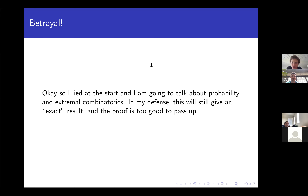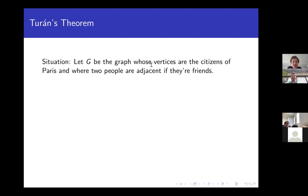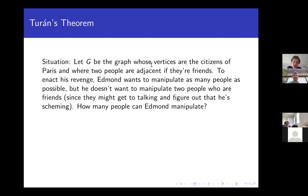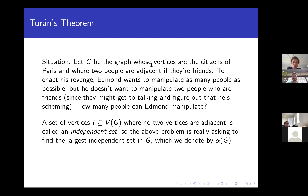Let G be the graph where the vertices are people in Paris and two people are adjacent if they're friends. Edmund wants to manipulate people for his revenge, but doesn't want to manipulate two friends — because then they might compare notes and uncover his scheme. So Edmund wants the largest independent set in G, denoted α(G): a set of vertices with no two adjacent. Computing α(G) is in general an NP-hard problem, so Edmund will settle for a good bound.